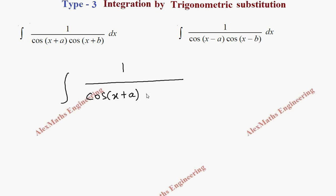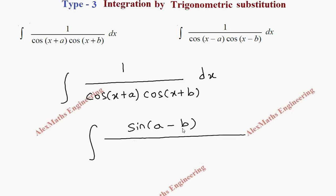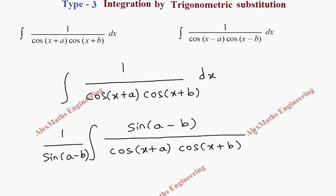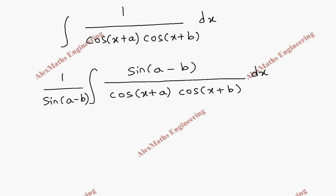We have to do some alteration in the numerator. I am multiplying sin(a-b) — sin(a-b) is a constant — so to compensate that, outside I have to divide by sin(a-b), and the denominator should be written as it is, into dx. Once again in the numerator we have a minus b.